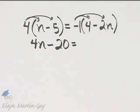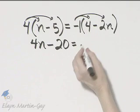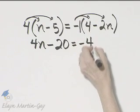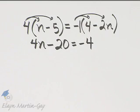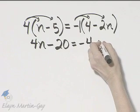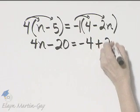Now if you'd like, you can think of that as negative 1. Negative 1 times 4, that's negative 4. And then negative 1 times negative 2n, that's positive 2n. I'll write plus 2n.